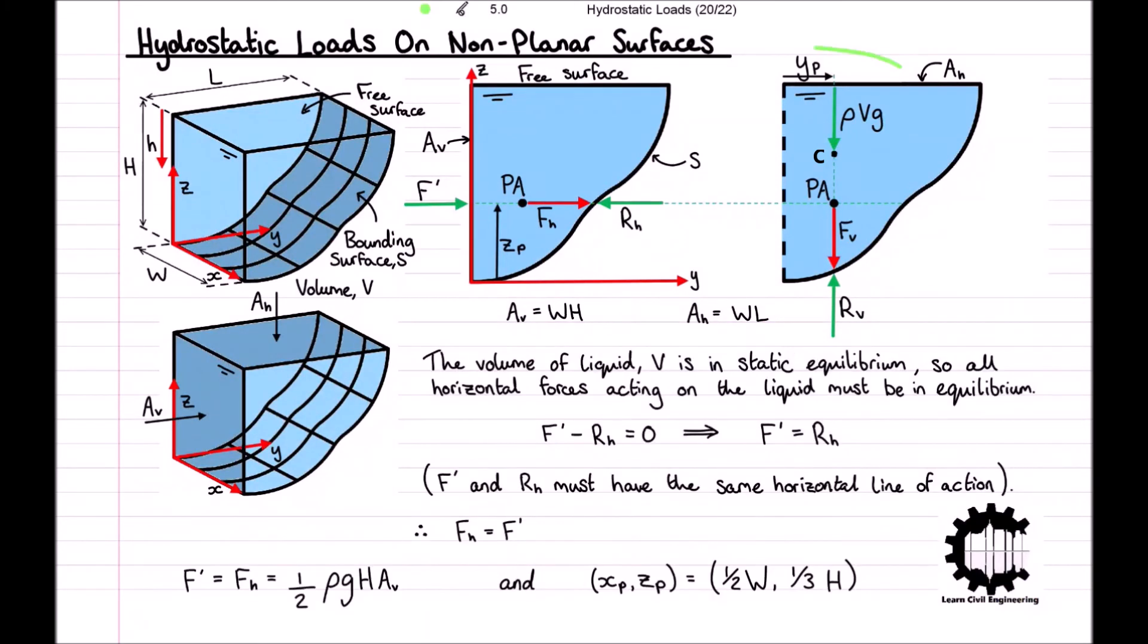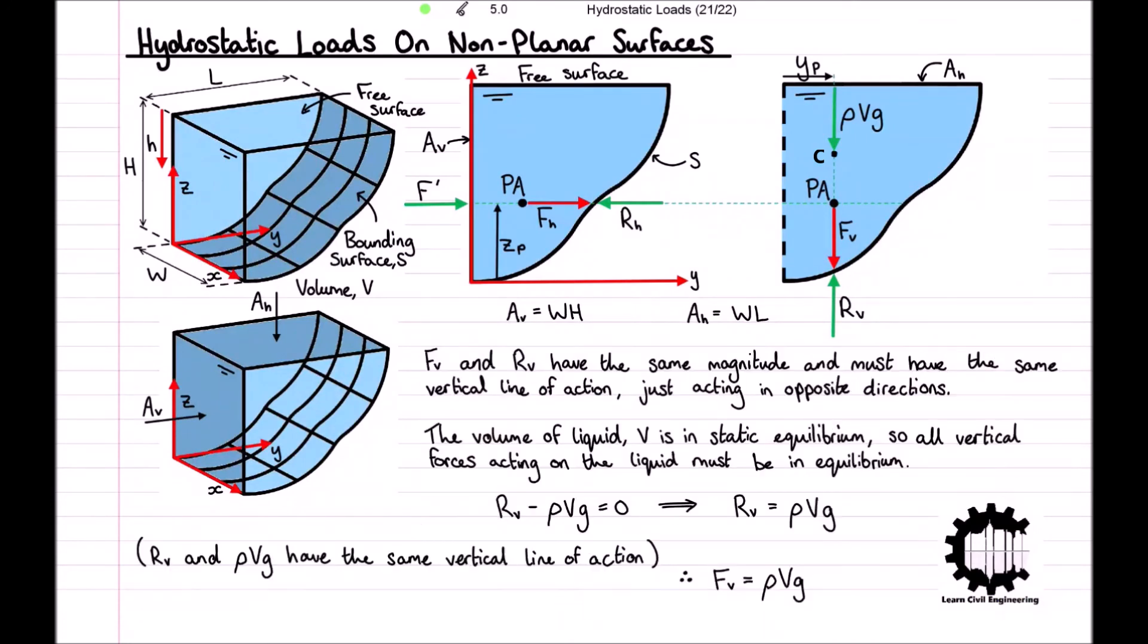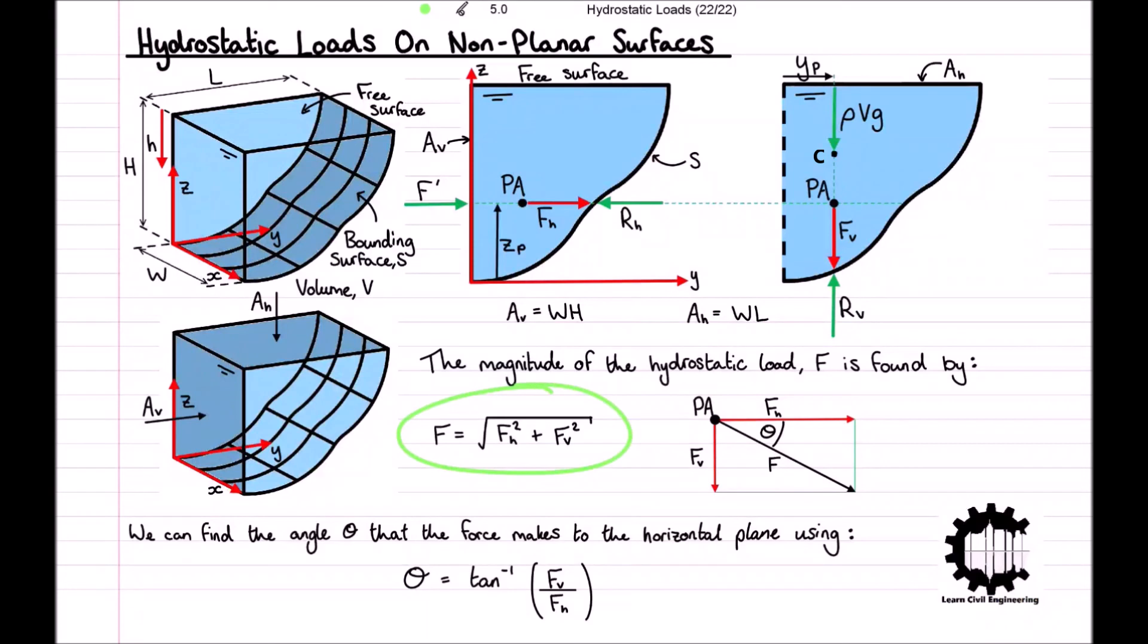So to recap, we decomposed our hydrostatic load into a horizontal and vertical component. Resolving the forces for equilibrium and implementing techniques from previous videos, we got an expression for the horizontal component and its point of action, which is also the point of action for the vertical component. We then did the same for the vertical component, allowing us to find the magnitude of the hydrostatic load by applying Pythagoras's theorem. And finally, we looked at the expression for finding the angle the force acts at from the horizontal plane.